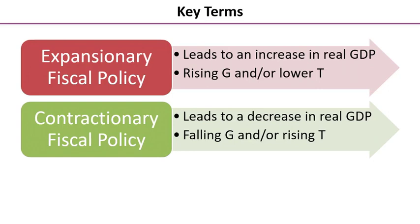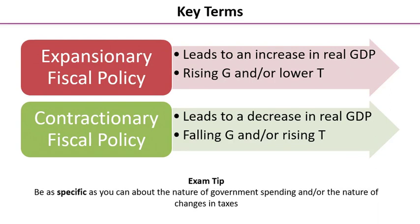Some more key terms: expansionary fiscal policy leads to an increase in real GDP — it's any fiscal policy leading to an increase in real GDP, generally involving rising government spending and/or lower tax rates. Conversely, contractionary fiscal policy is about a decrease in real GDP — any combination of falling government spending and/or rising tax rates.